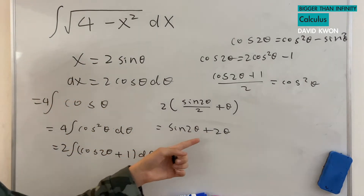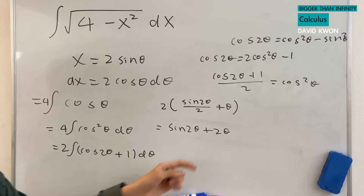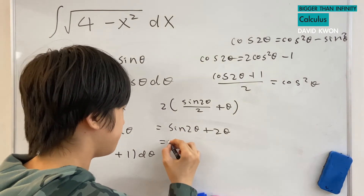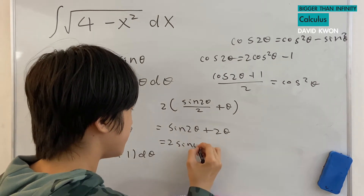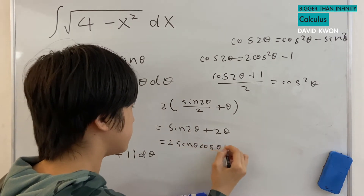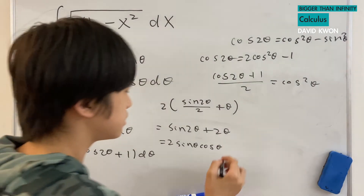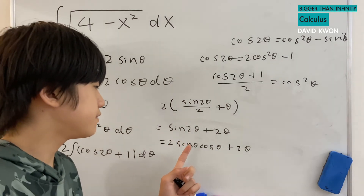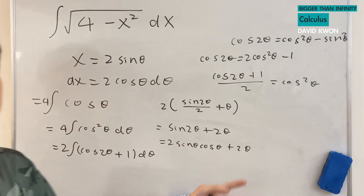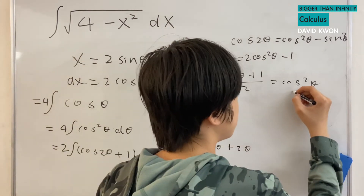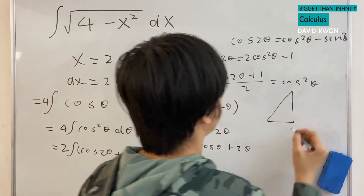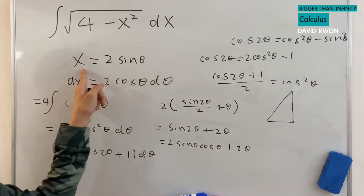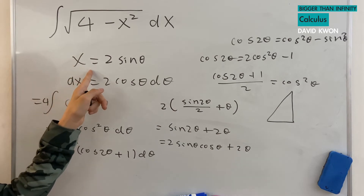The way we would get this in terms of x — the first thing we need to change is sin 2 theta. We have to change it into 2 times sin theta times cos theta. That is one of the things you have to memorize from the trigonometric identities. To find the values of sin theta, cos theta, and theta, we need to make a triangle.